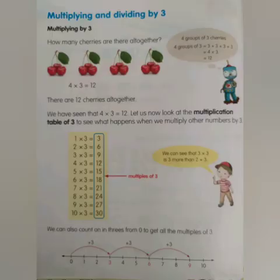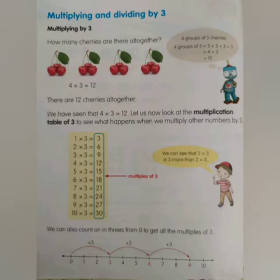Now let's look at multiplying and dividing by three. Starting with multiplying by three — how many cherries are there altogether? How many groups are there? One, two, three, four. How many cherries in each group? One, two, three. So four times three makes twelve. There are twelve cherries altogether.